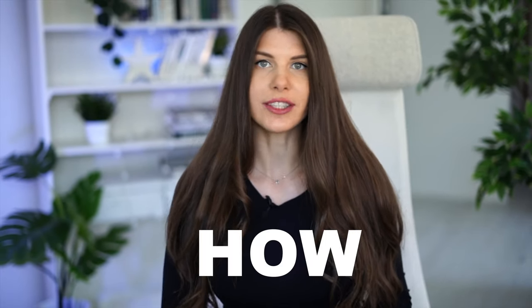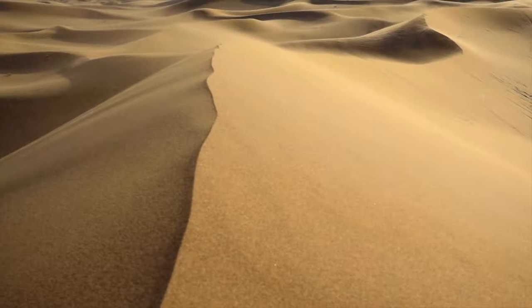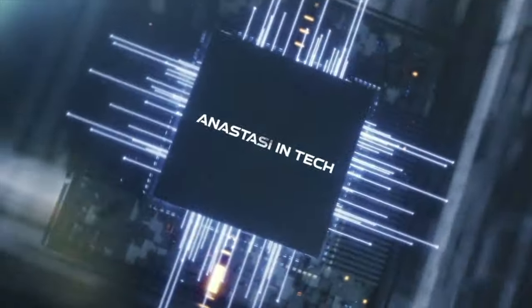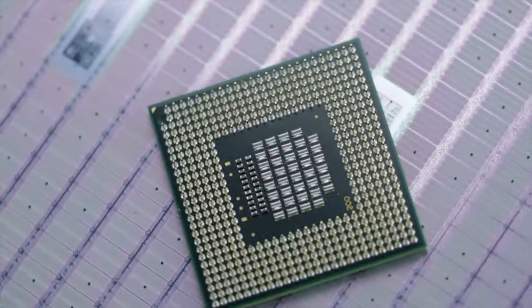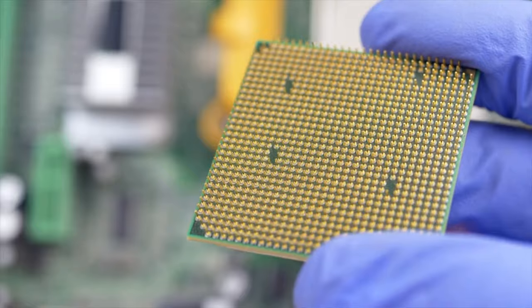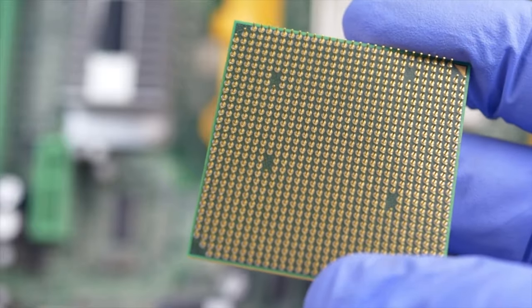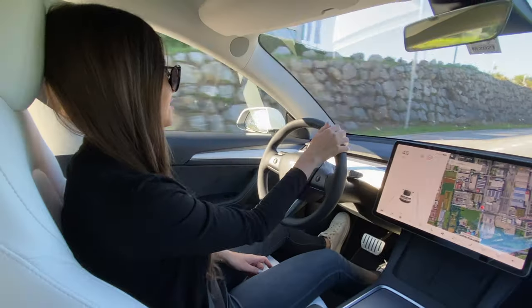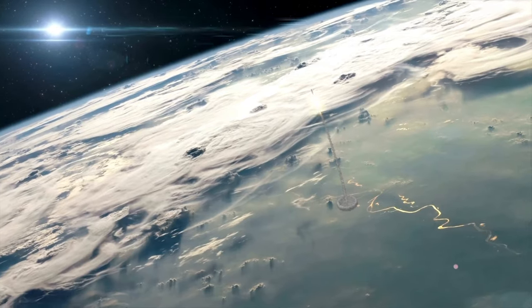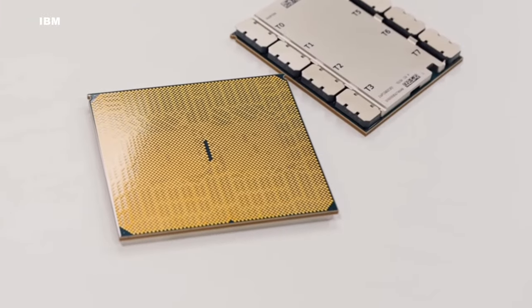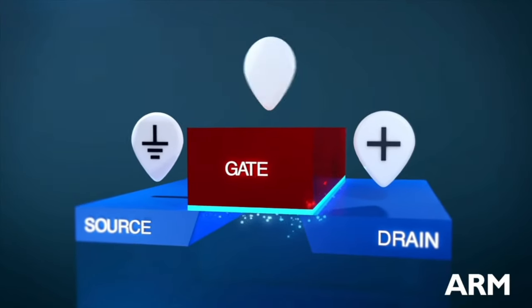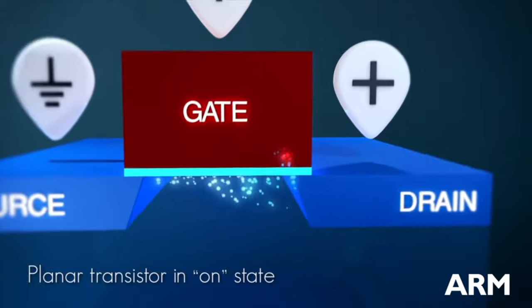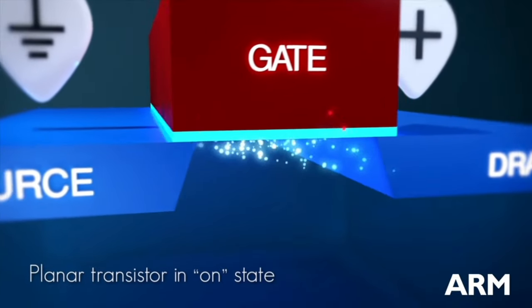In this video I will explain how modern chips are made from sand to silicon. Silicon chips are the heart of any electronic device you can imagine — laptops, smartphones, cars, and even rockets. All of these chips are made of transistors, those microscopic switches that control electric current and allow the chip to perform its functions.